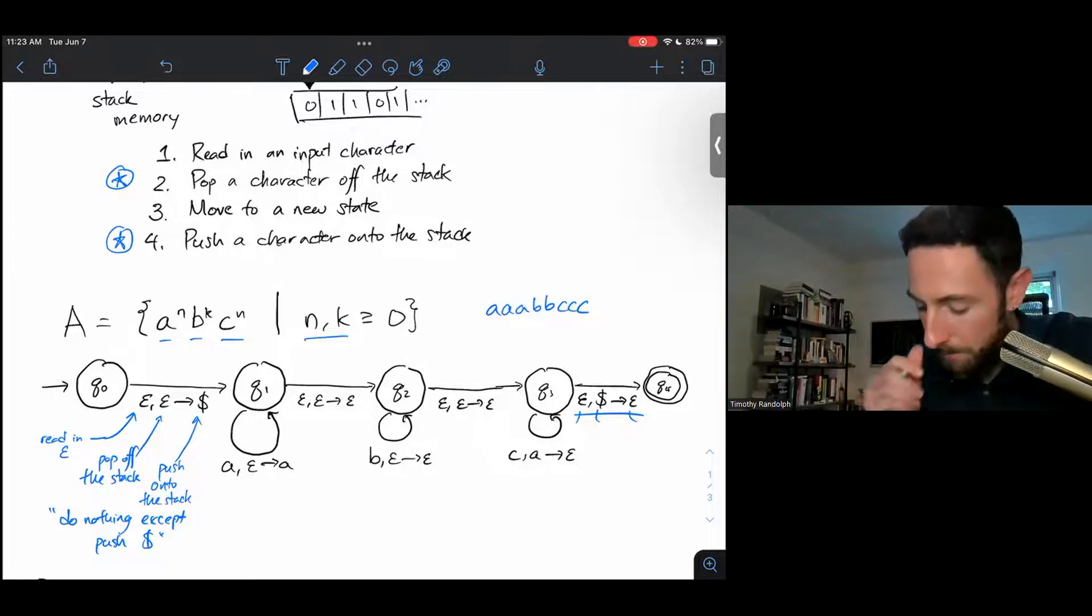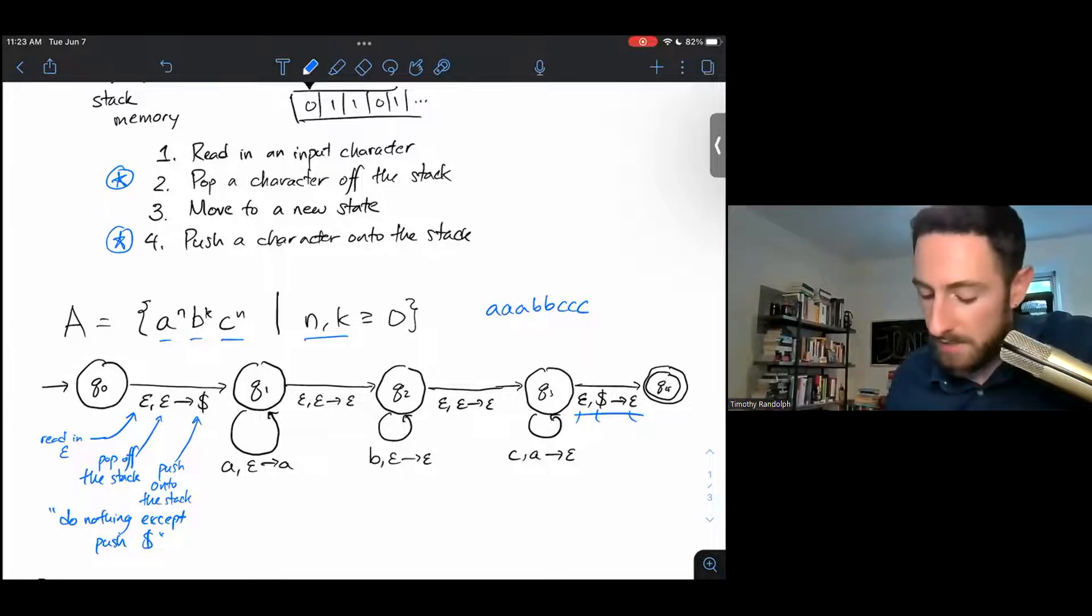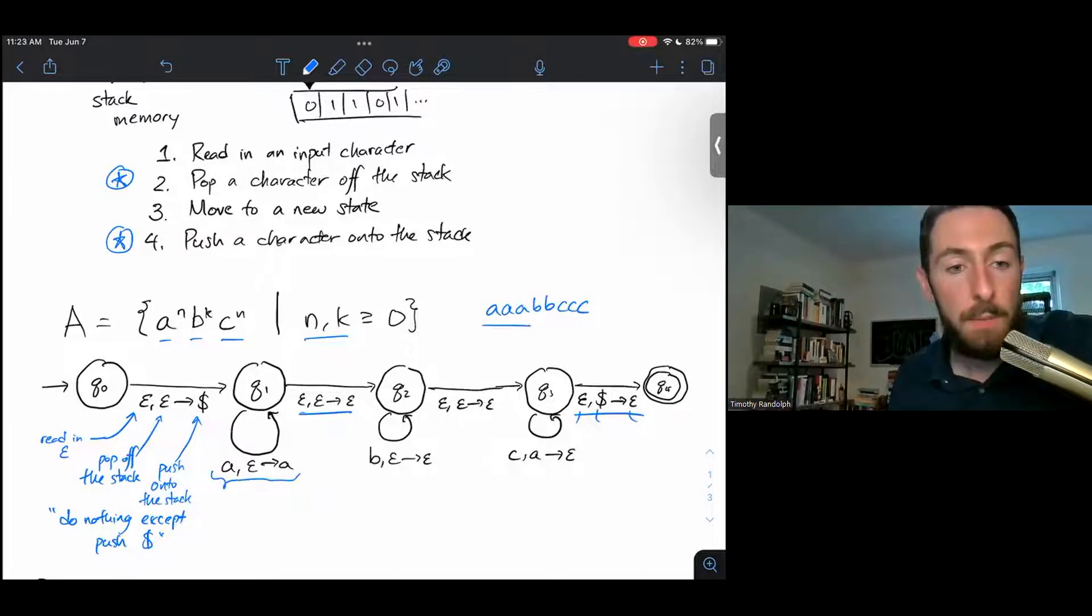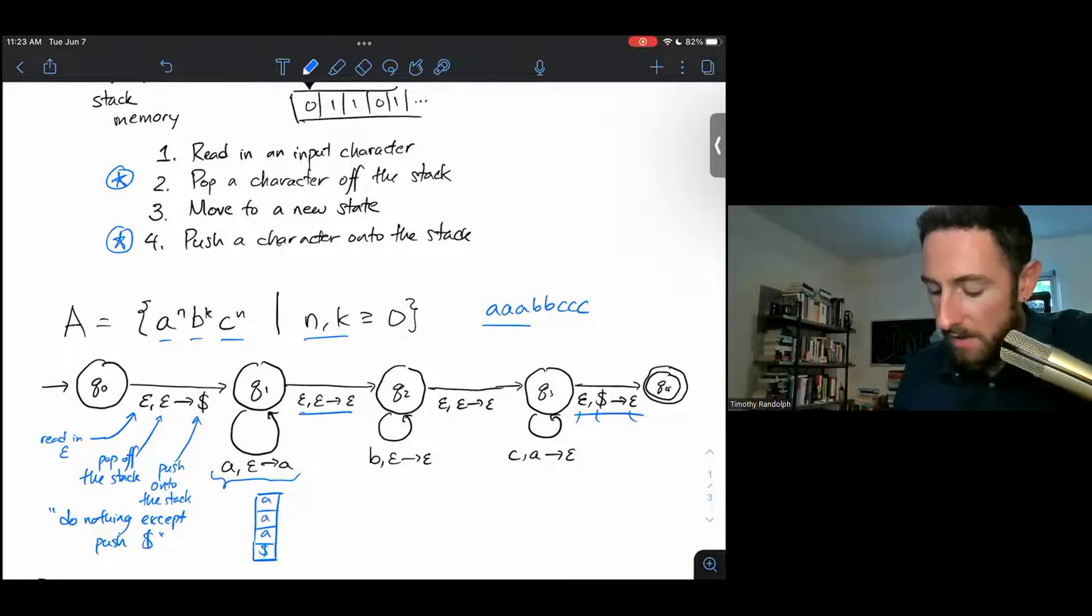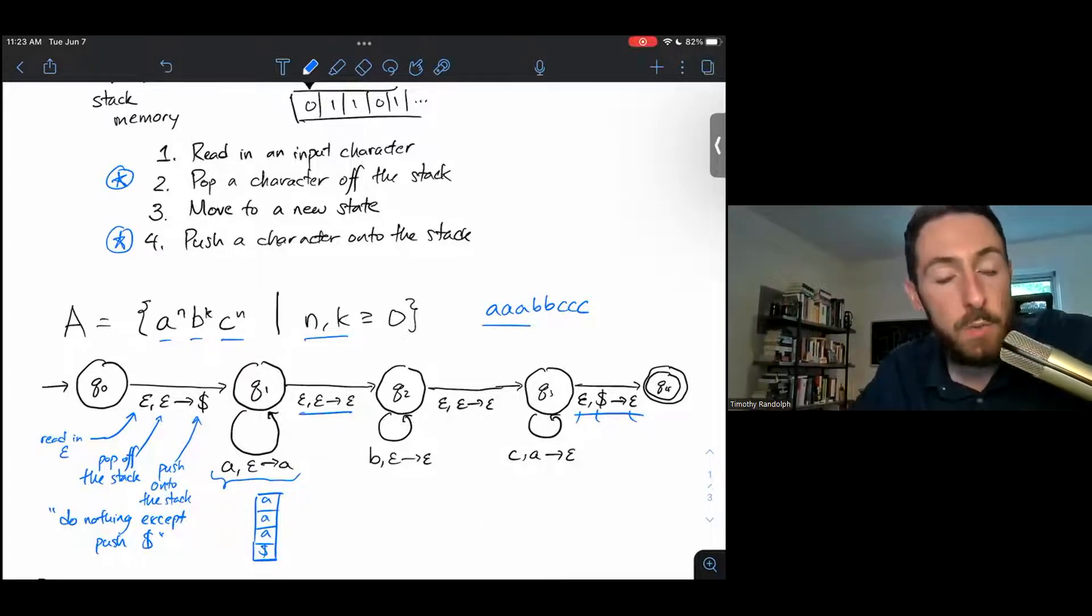Now we find ourselves in Q1. So yes, there is some branch that takes this epsilon transition immediately, but we're going to focus on the branch that hangs out in Q1. And we can read this transition as reading an A from the input string, pop nothing off the stack. That's the epsilon, and then push an A onto the stack. So after we take this transition three times, our stack will have a dollar sign at the bottom and it'll have an A on it for each A we read in on our input string. And at that point, we can no longer take this edge because it's no longer possible to read in an A from our input string. We've read in all the A's.